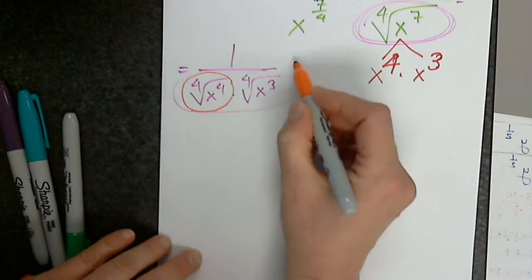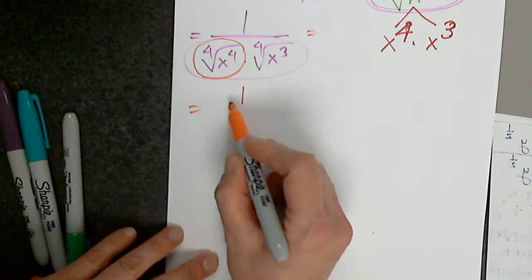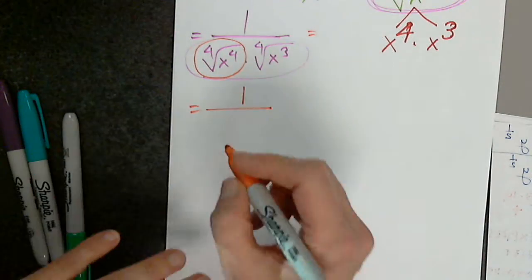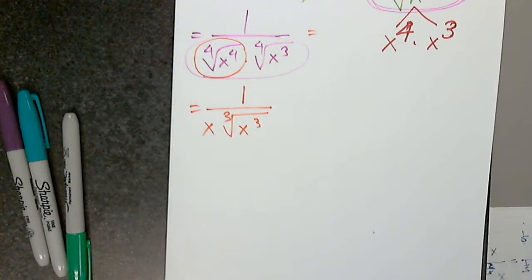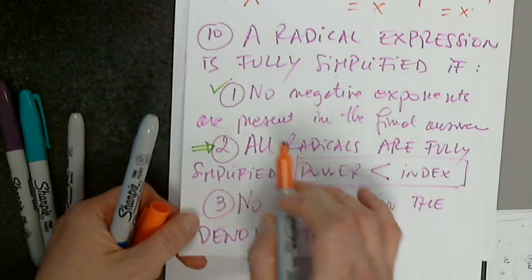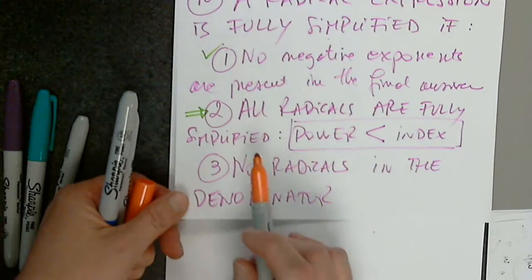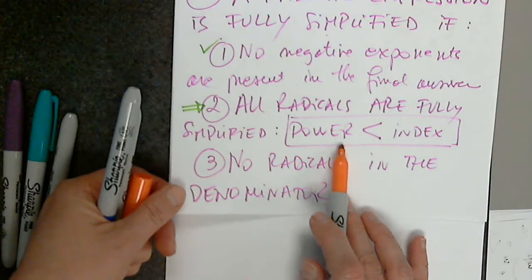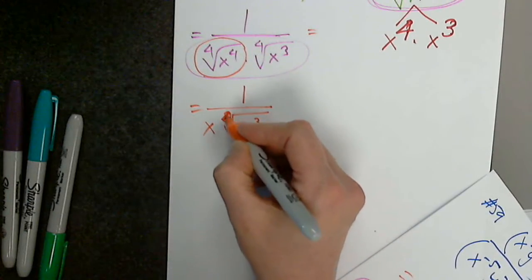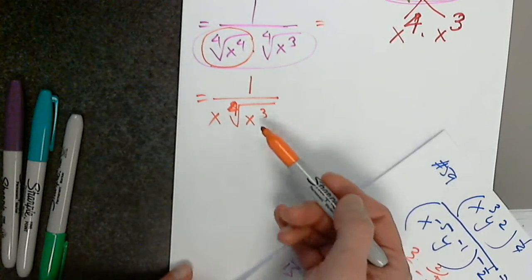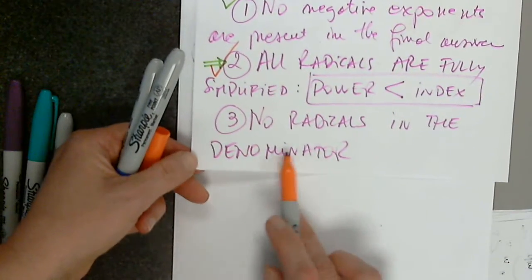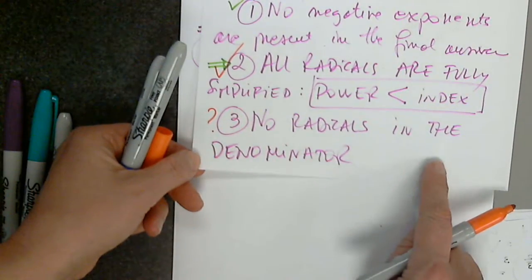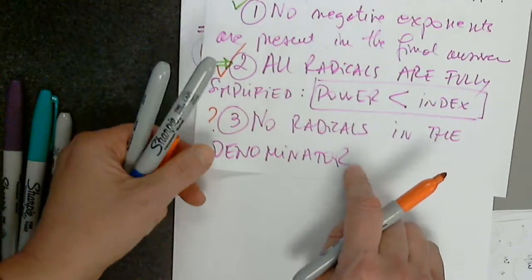This can be simplified — assuming everything is positive, it's just x. And now I have the fourth root of x to the third. Condition one is done; the power is now less than the index — that is true. Now I'm facing the last situation: no radicals in the denominator.